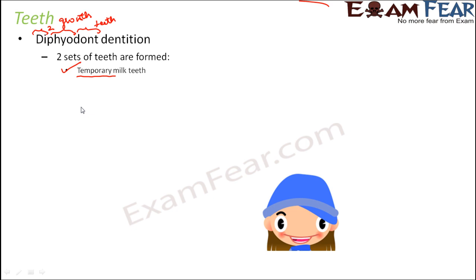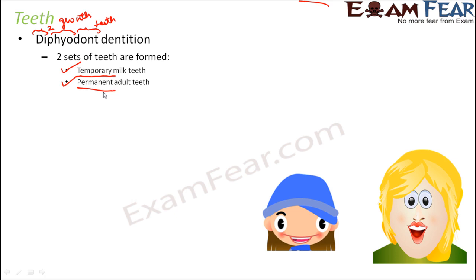By the time kids are around 8 to 10 years of age, these temporary teeth start falling off and are replaced by a permanent set of adult teeth which remain throughout life. Once they start falling off, no teeth will come up to replace them. The number of milk teeth which appear in children are 20, and these 20 milk teeth get replaced by a total of 32 permanent adult teeth.